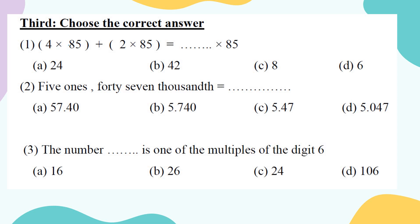4 times 85 plus 2 times 85 equals what? This is distributive property, which we use in area models. Since 85 is multiplied both times, it's as if one side is 85 and the other side is 4 plus 2. Four plus two equals 6, so the expression equals 85 times 6.